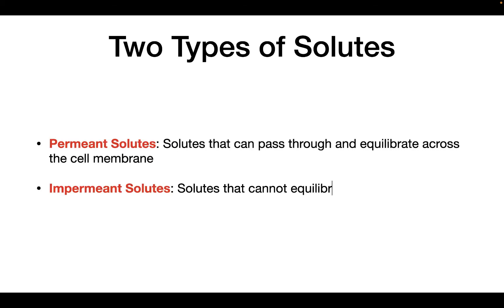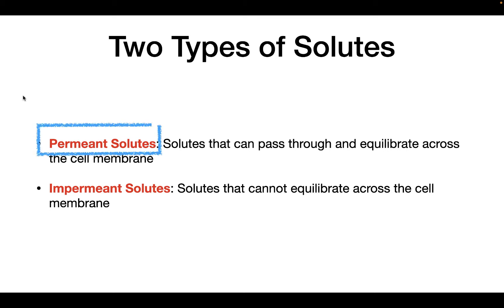In order to understand the difference between these two terms, we have to understand the difference between two different types of solutes. The first are permeant solutes — these are solutes that can pass through and equilibrate across the cell membrane. The second are impermeant solutes — these are solutes that cannot equilibrate across the cell membrane. We're going to start off with permeant solutes.